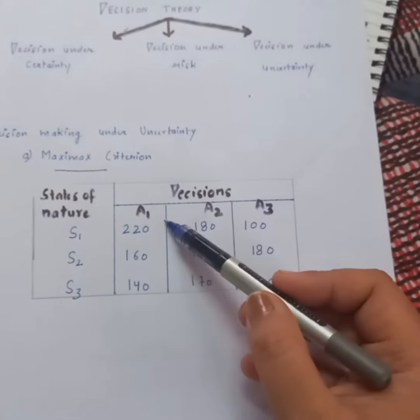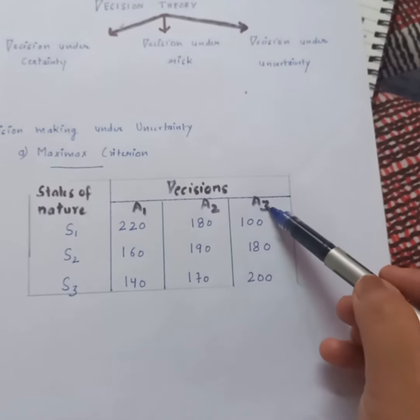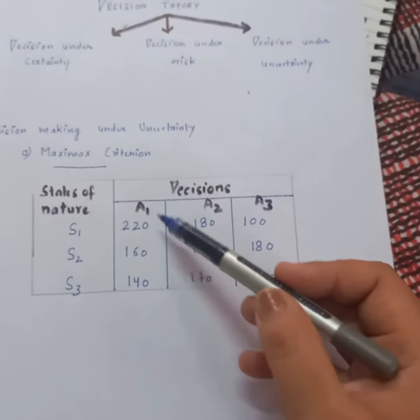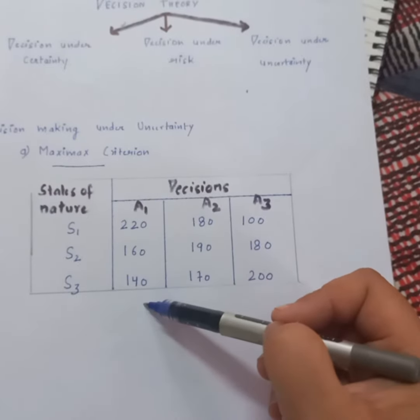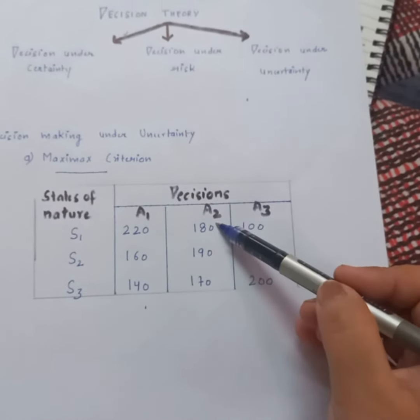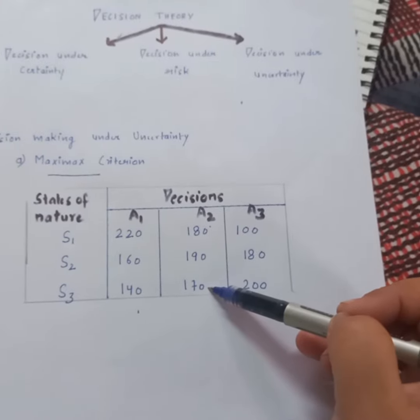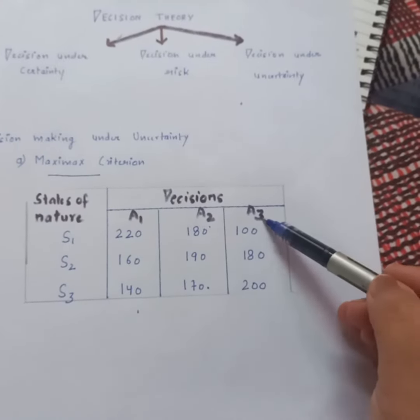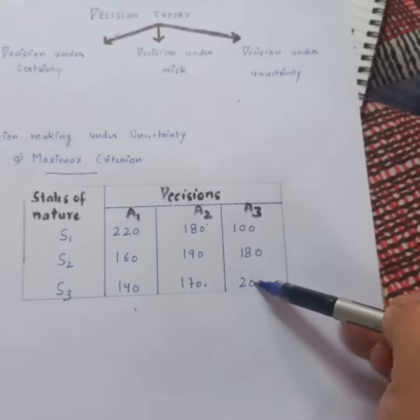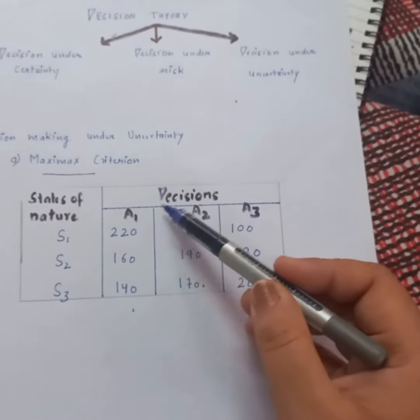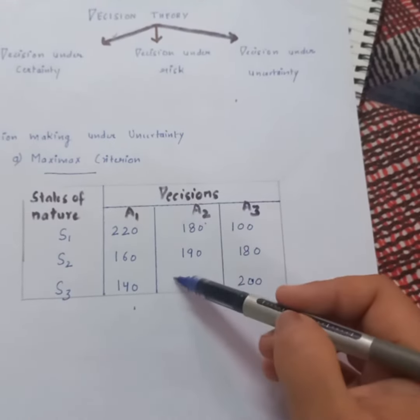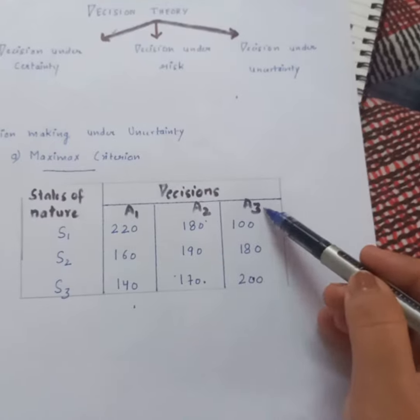of action: A1, A2, A3. If we talk about A1, then we have three possible payoffs. In A2, we have three possible payoffs or profits. In A3, we have three possible payoffs. So, according to Maximax criteria, we will see which alternative has the maximum value.